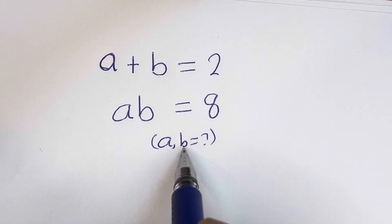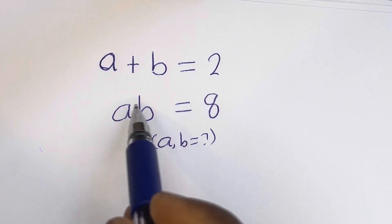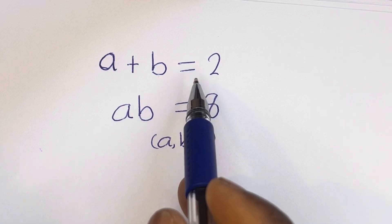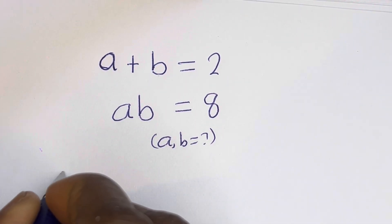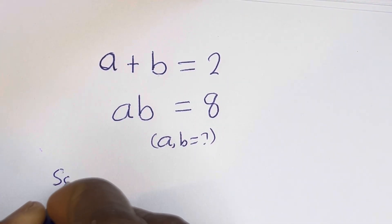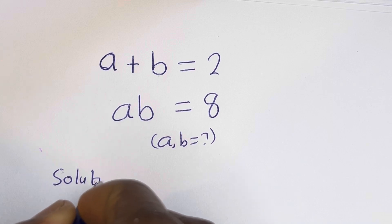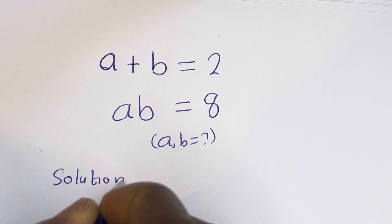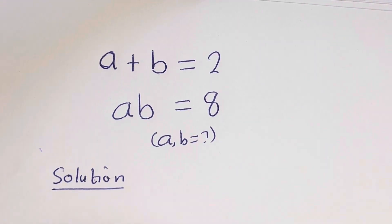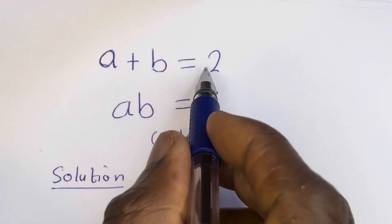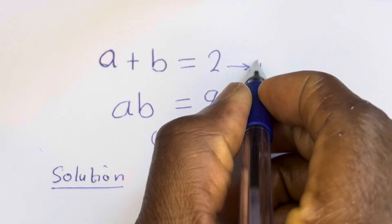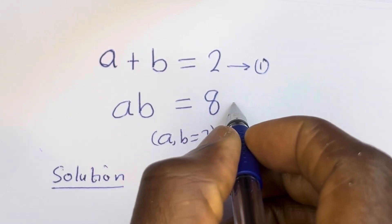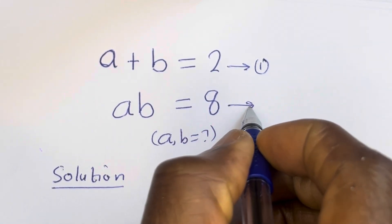Hello. How to solve for a and b in this equation: a plus b is equal to 2, and ab is equal to 8. Solution.